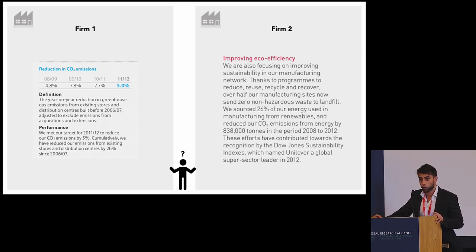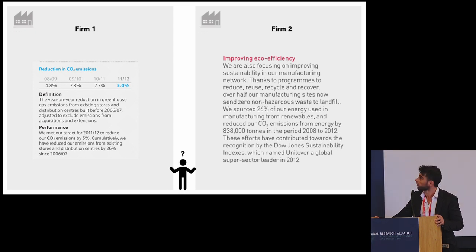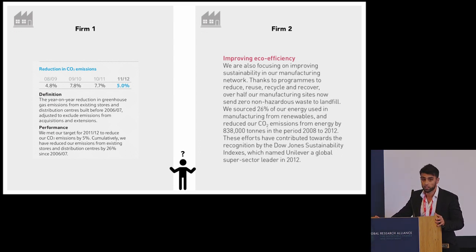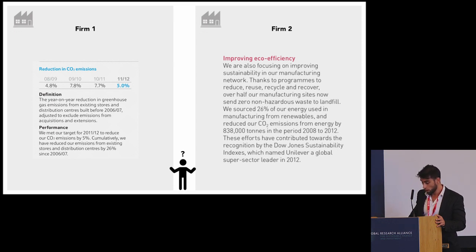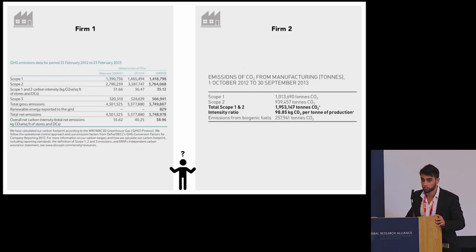You realize that it's not easy to choose which firm has the lowest emissions. Firm one shows a percentage reduction year on year, while firm two shows an absolute reduction over different time periods. So at the end of the day, it's quite impossible to identify which firm has the lowest emissions. With this other kind of information, however, it's easier to find which firm has the lowest emission.